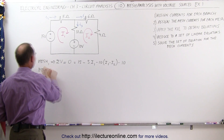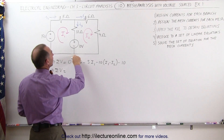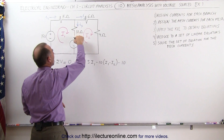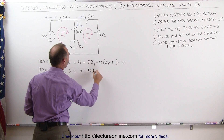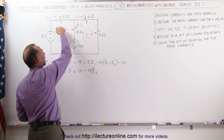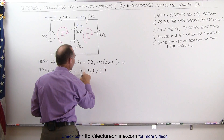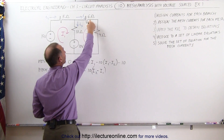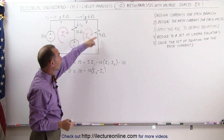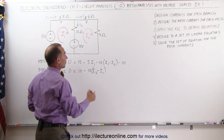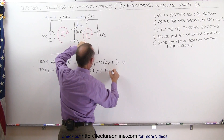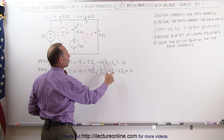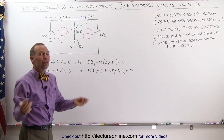Now we'll do mesh two, summing up all the voltages. Starting at this point, going across this voltage source, that's a plus 10 volts. Then we have a voltage drop across this resistor: minus 10 times I2. But we have a voltage rise relative to current I1 in mesh one, so minus I1 — again, minus times minus makes a plus, a voltage rise relative to I1. Coming around the corner, since these two resistors are both in series, 6 plus 4 is 10 ohms. We have a voltage drop: minus 6 times I2 and minus 4 times I2. That equals zero. Anytime you have multiple resistors in series in a branch, you can simply add them together first.